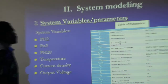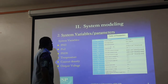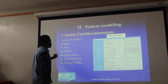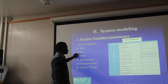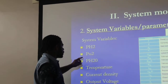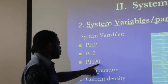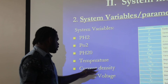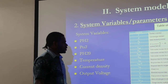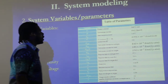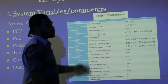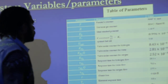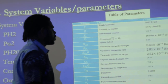For the system variables and parameters, these include the partial pressure of hydrogen, partial pressure of oxygen, and partial pressure of water, and also the temperature, the current density, and the output voltage. Based on those parameters, the model has been implemented and the simulation output has been carried out.